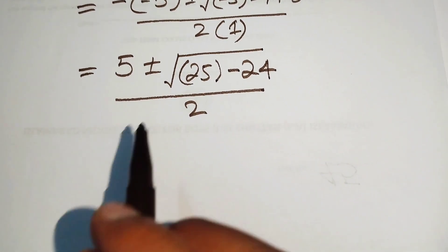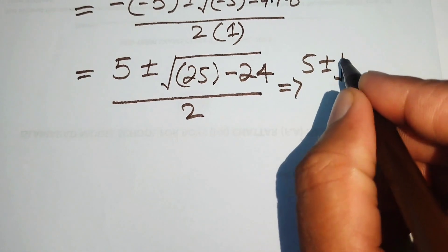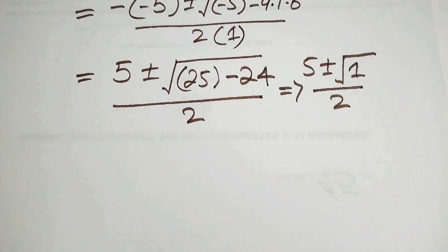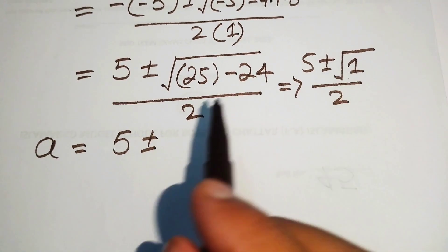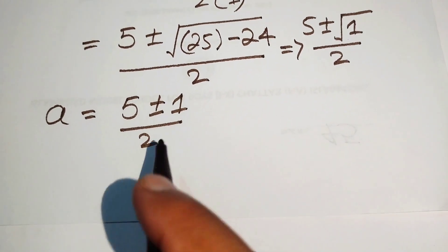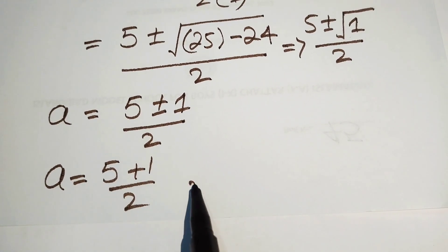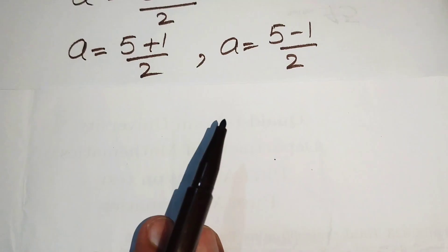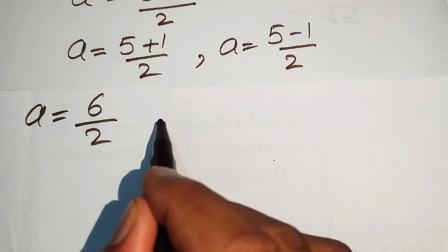Subtracting 24 from 25 gives 1, so we have 5 plus or minus square root of 1, divided by 2. The square root of 1 is 1, so a equals (5 plus or minus 1) divided by 2. Separating the two values: the positive case is (5 plus 1) over 2, and the negative case is (5 minus 1) over 2.